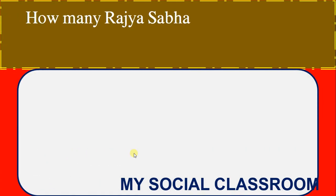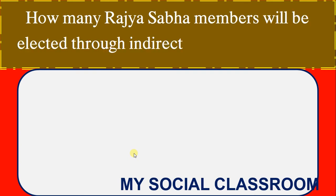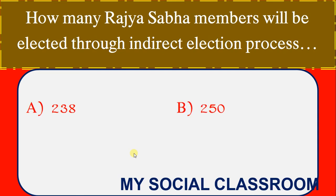How many Rajya Sabha members will be elected through the indirect election process? Options: 338, 250, 260, 543. Correct Answer: 238.